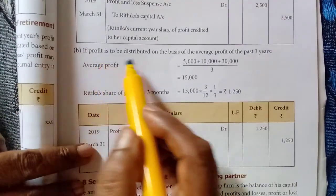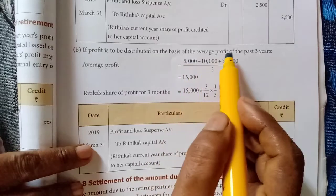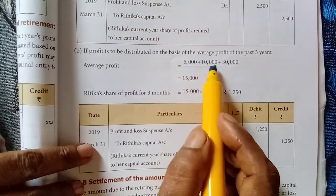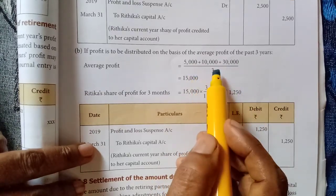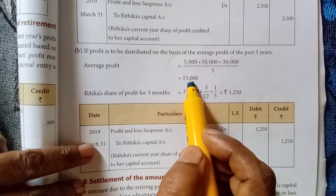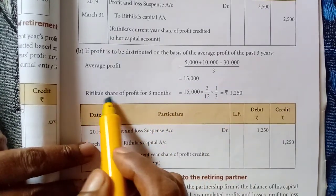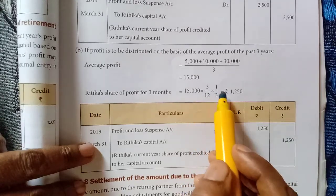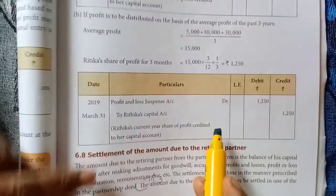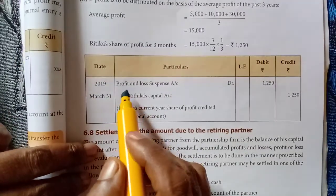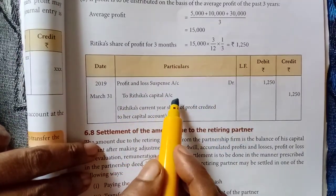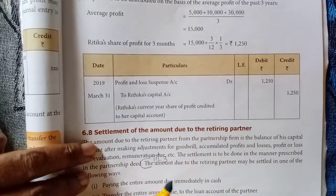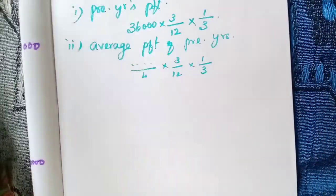Part B: profit distributed on the basis of the average profit of the past three years. Three years' profits given: 5,000, 10,000 and 30,000, totaling 45,000 divided by 3 equals 15,000 average profit. Hithika's share: 15,000 into 3 by 12 into one-third equals 1,250. Entry: profit and loss suspense account debited to Hithika's capital account — Hithika's current year share of profit credited to her capital account.